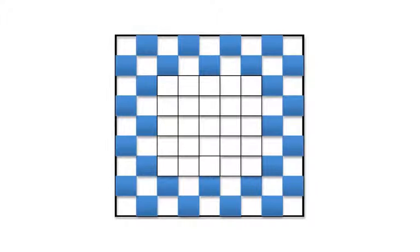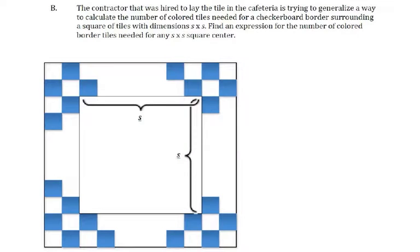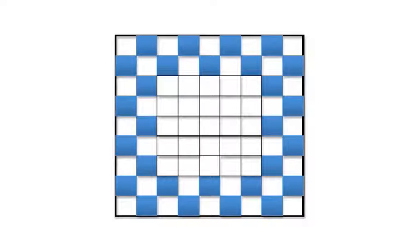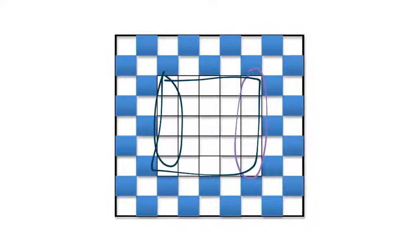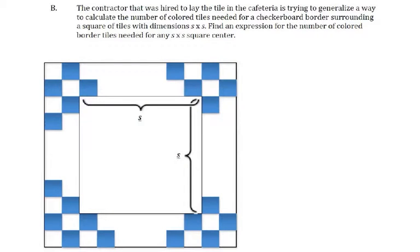So now, let's take a look at the B part. The contractor that was hired to lay the tile in the cafeteria is trying to generalize a way to calculate the number of colored tiles needed for a checkerboard border surrounding a square of tiles with dimensions S by S. So over here, we knew exactly how many tiles we had right here, right? We could count all these. No problem.